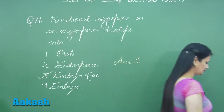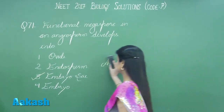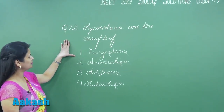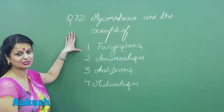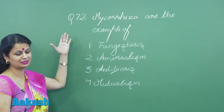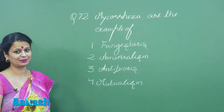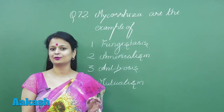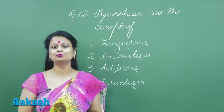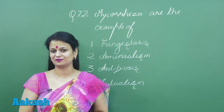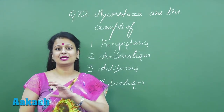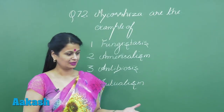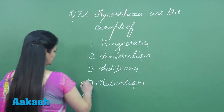Moving on to question number 72, this is with respect to mycorrhiza. We have to choose the correct option regarding the interaction seen in mycorrhiza. Mycorrhiza is a symbiotic association of the roots of higher plants with fungi, which is also known as mutualism. So the right option for this question is option number four.